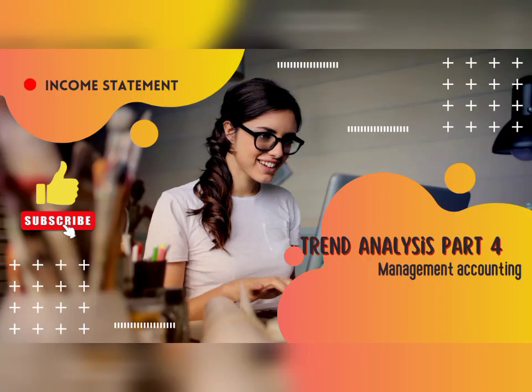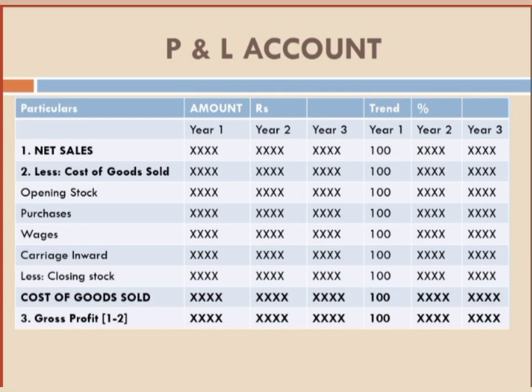Hi everyone, I hope you all are doing great. Today's video is related to trend analysis. I have already uploaded Part 1, Part 2, and Part 3. Previously it was balance sheet only, but this one is an income statement — a profit and loss account — under management accounting trend analysis, Part 4. We have 3 years given, and trend means percentage. We calculate for Year 1, Year 2, and Year 3 using the same format as our vertical income statement.